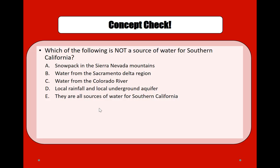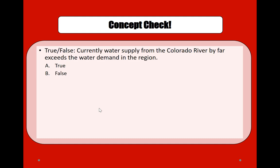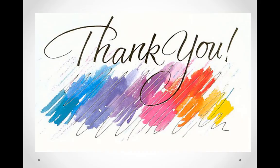Concept check: Which of the following is not a source of water for Southern California? They are all sources — we get water from the Sierra Nevada, Sacramento Delta, Colorado River, as well as local rainfall and groundwater aquifers. Second concept check: True or false — currently water supply from the Colorado River far exceeds demand in the region? False. Right now, demand is actually higher than supply. That's all, thank you.